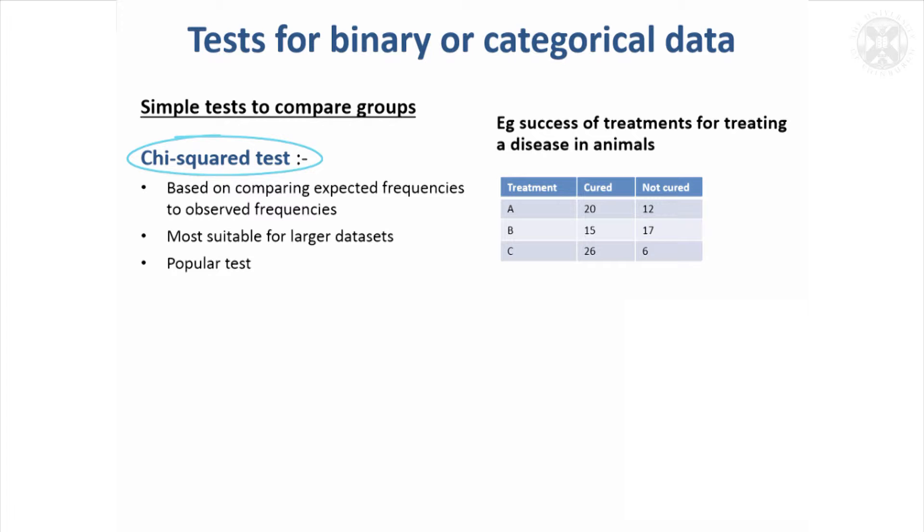And so this is a test for comparing if you've got binary or categorical data. So you've got an outcome and something either happens or it doesn't happen, or things fall into three or more categories. You can use something called a chi-squared test.